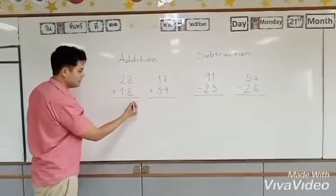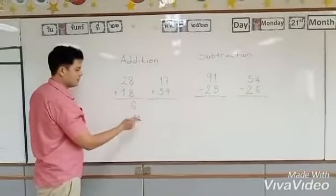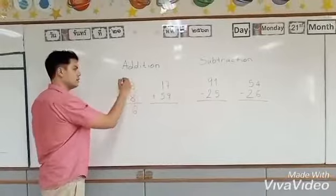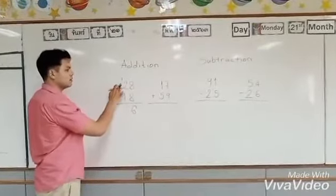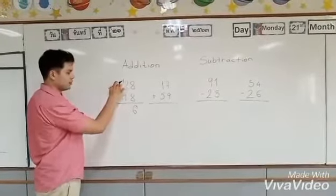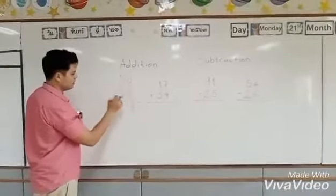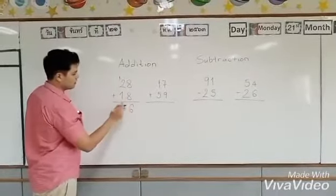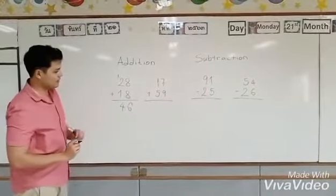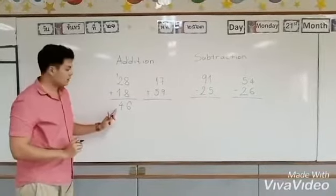8 plus 8 is 16. I'm going to write 6, and transfer 1 here because 1 represents 10. So now I'm going to do my tens: 1 plus 2 equals 3, plus 1 equals 4. So 28 plus 18 equals 46.